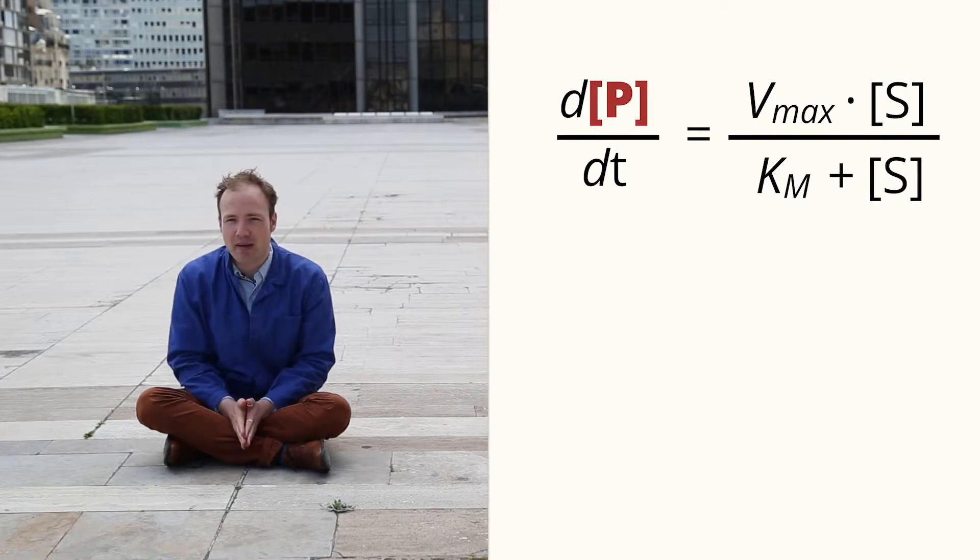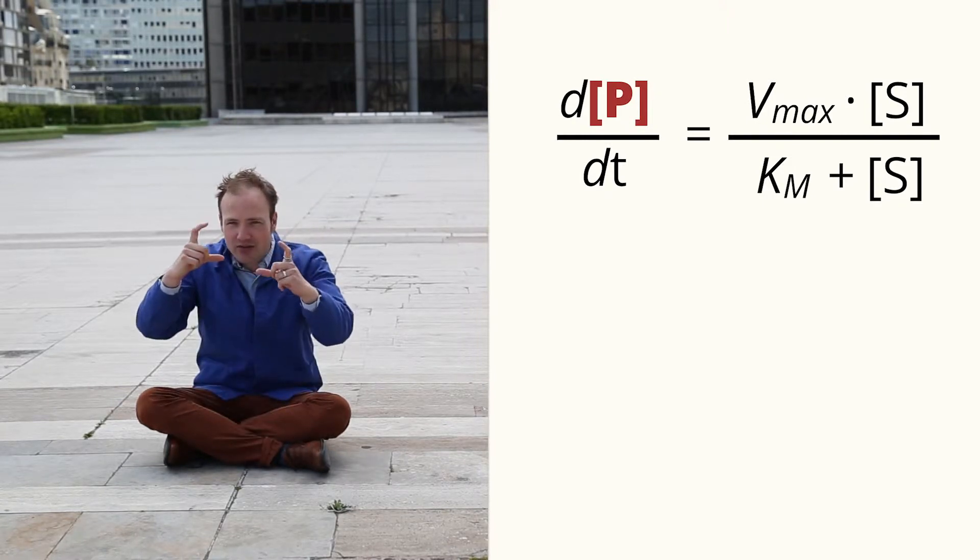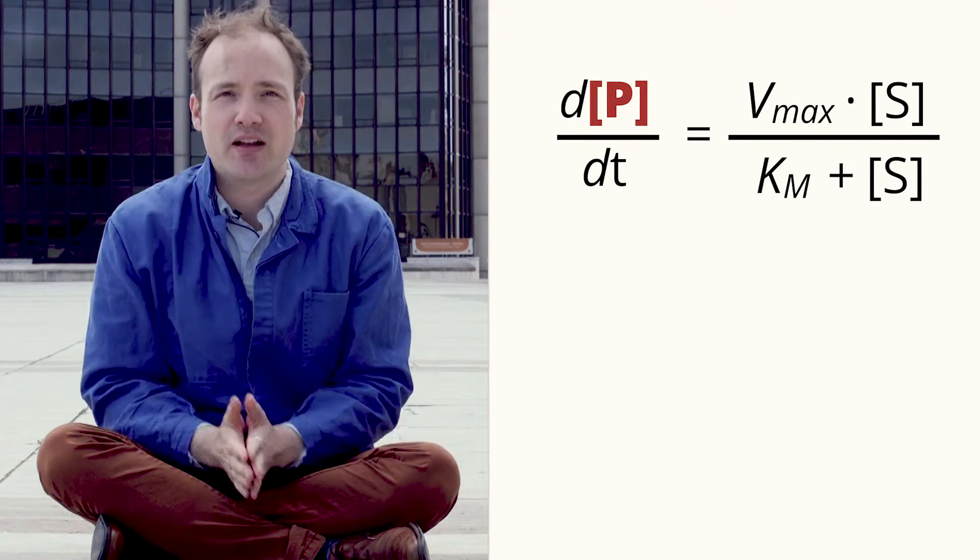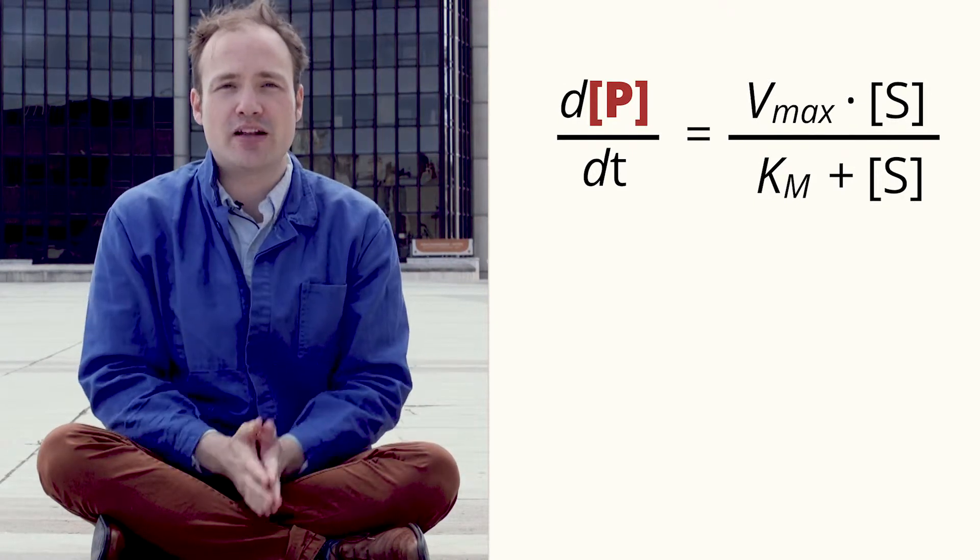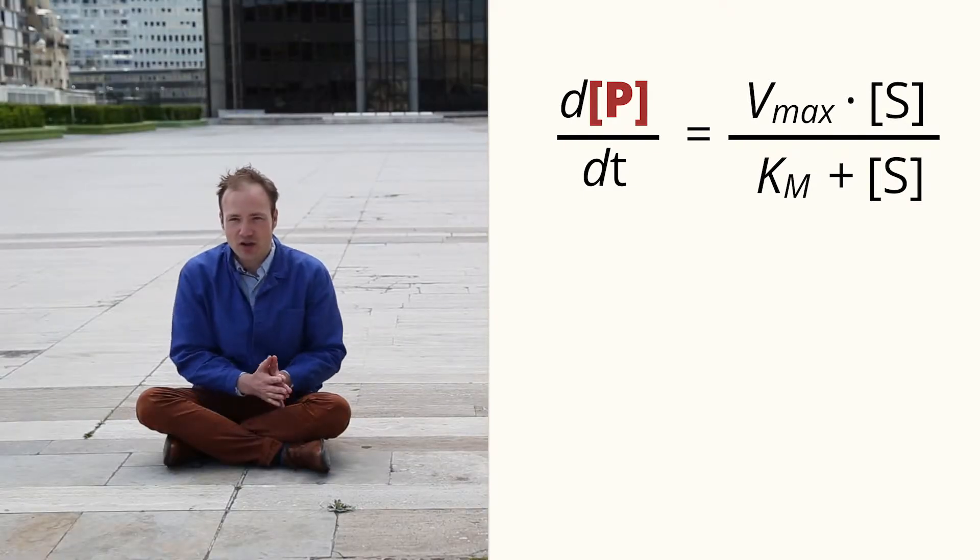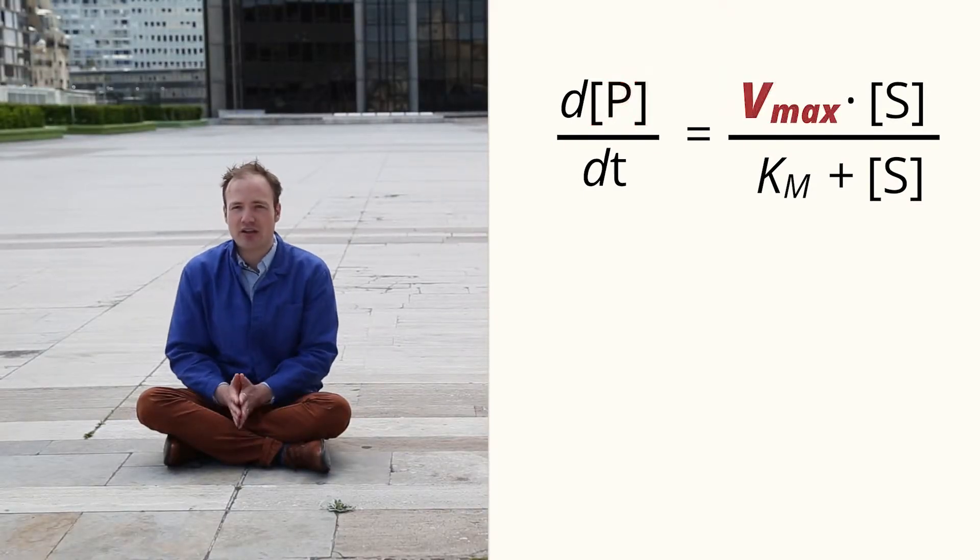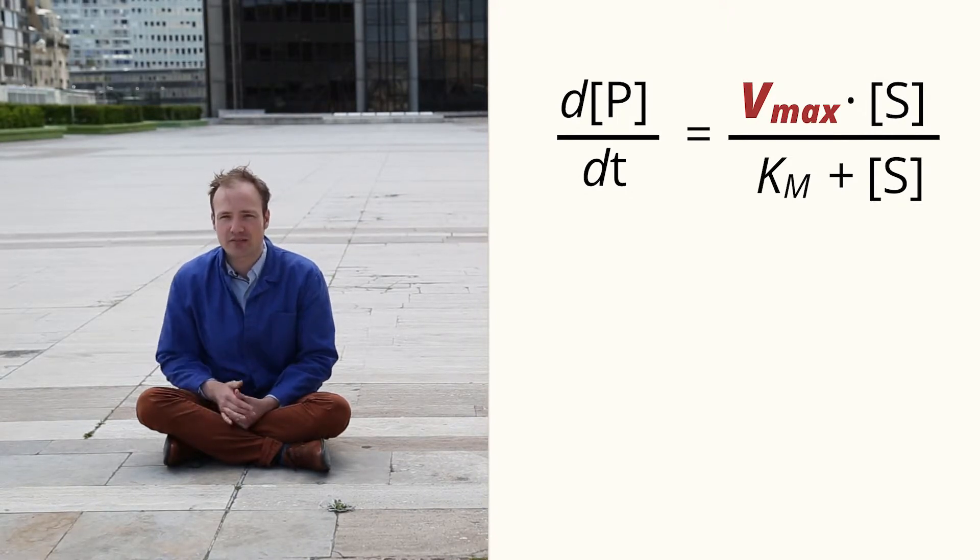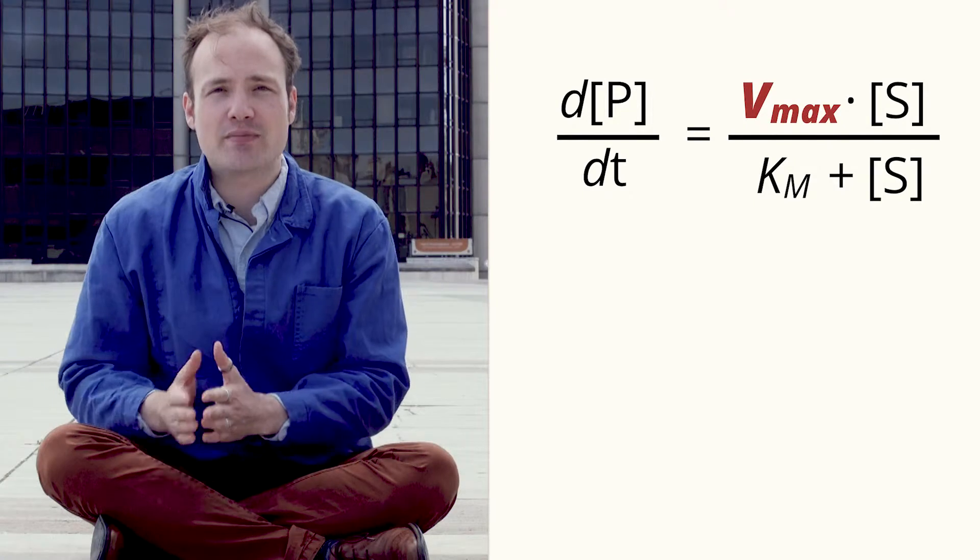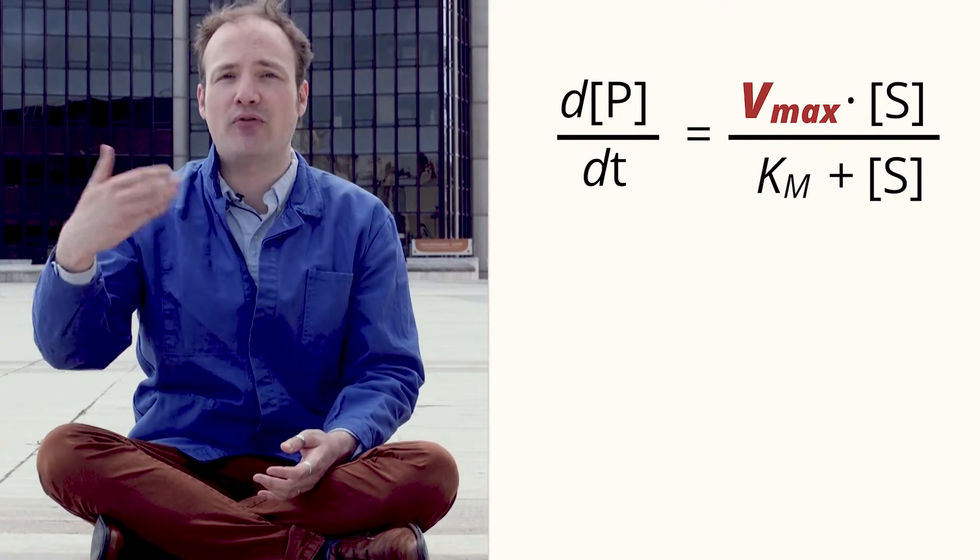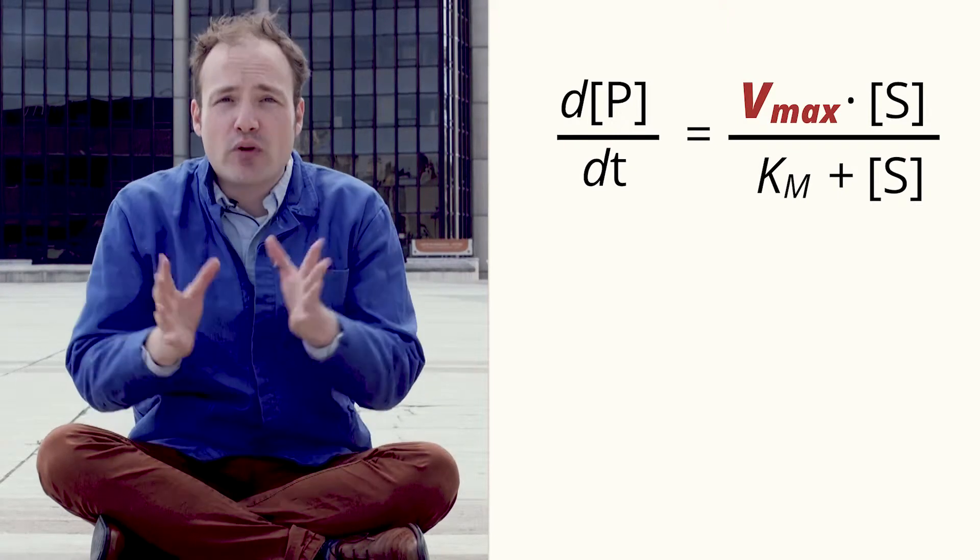P represents the enzymatic product. These brackets are a notation that reminds us that we're talking about a concentration. The left-hand side of the equation has units of concentration per time. Now, over on the right side of the equation, Vmax represents the maximum velocity or rate of the enzymes that we're using. It will depend on how much enzyme we have, as well as how fast the enzyme works.